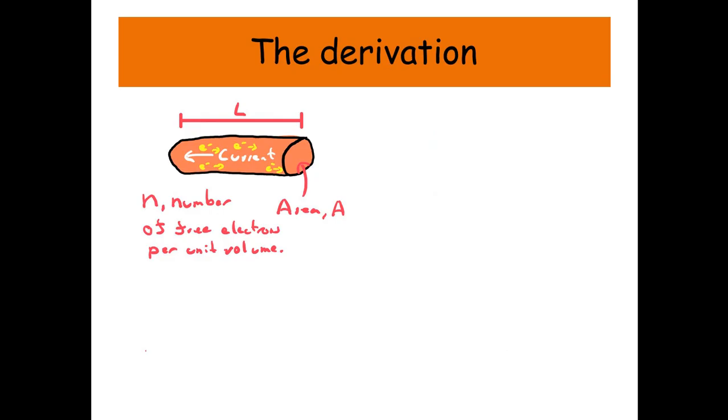And this material, it's got a number of free electrons per unit volume, or per meters cubed. And we're going to call that N. Now the volume of our material is L times A. And therefore the number of free electrons, well that's going to equal N times L times A.